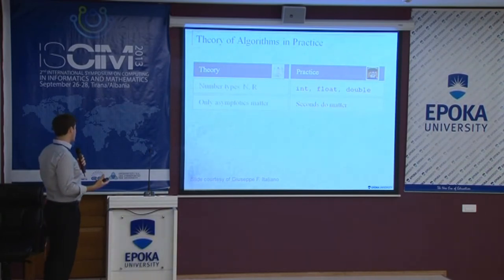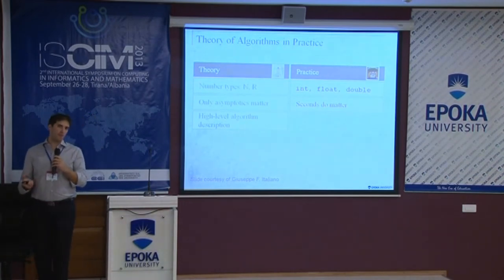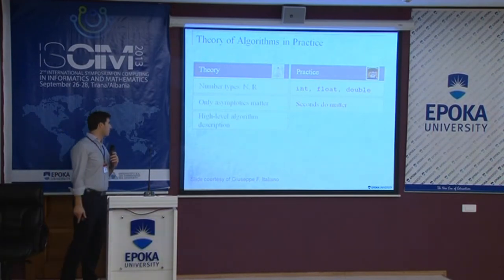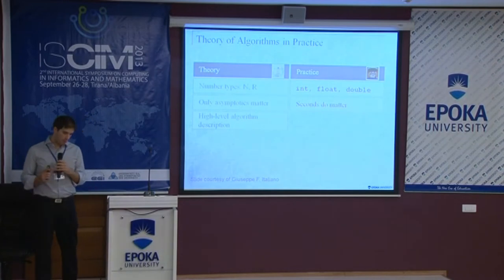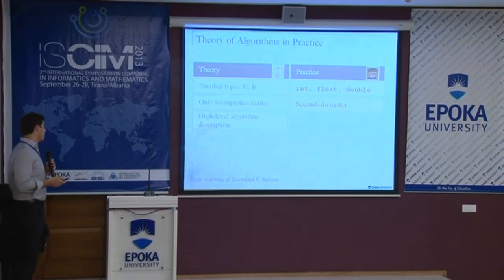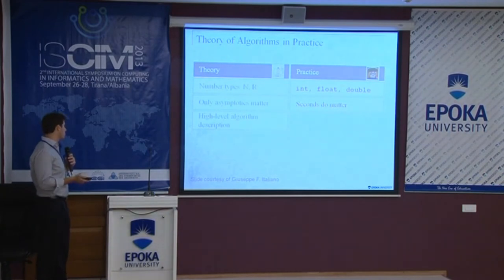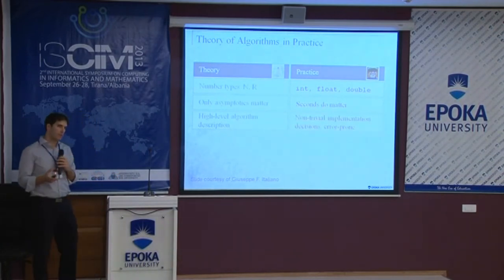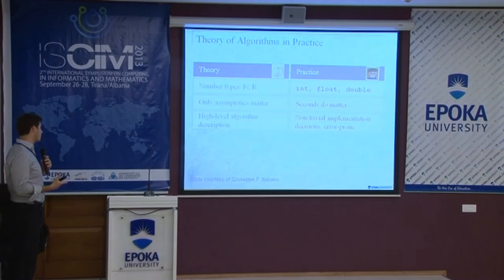In modern algorithm theory, we just give a high-level description of the algorithm. In older days, people used to accompany their theory paper with actual pseudocode or real code, and people were more able to immediately use it. But even then, when we're given a high-level description, we have to face various decisions that affect our implementation — and decisions we make may affect the correctness of the algorithm.